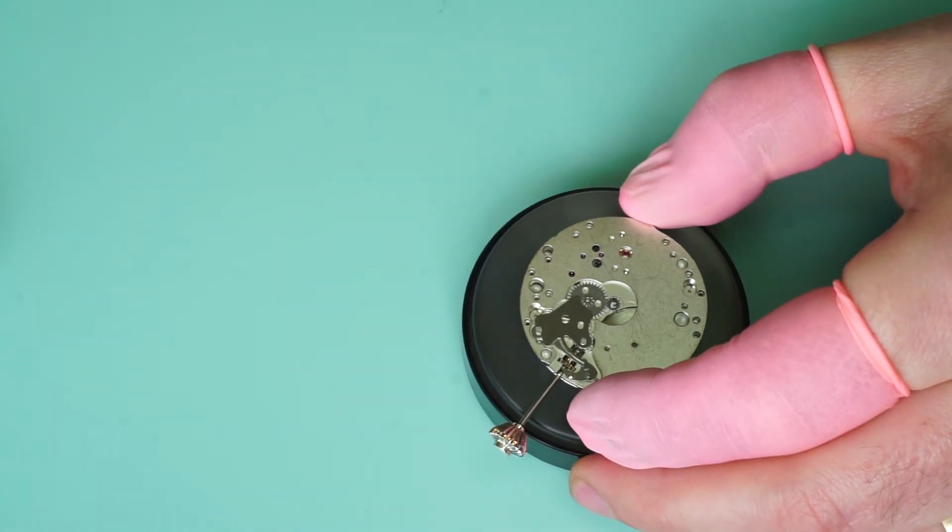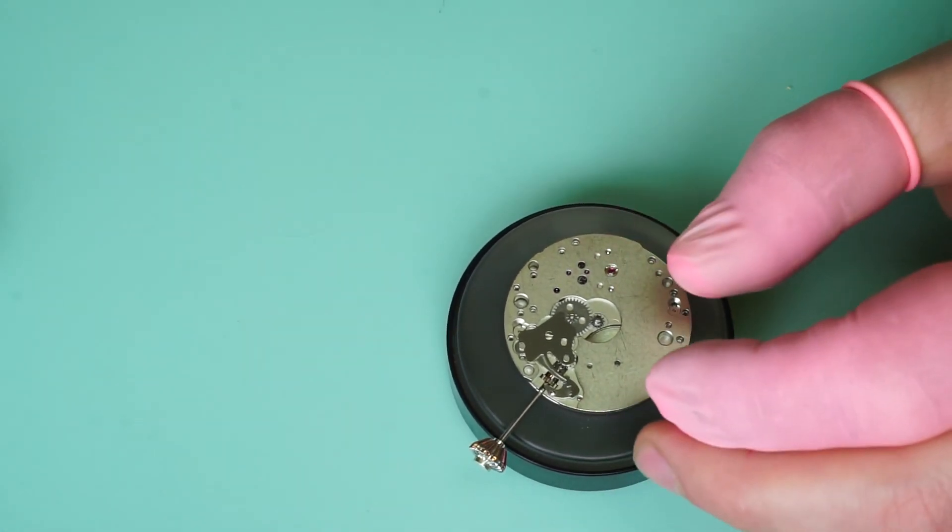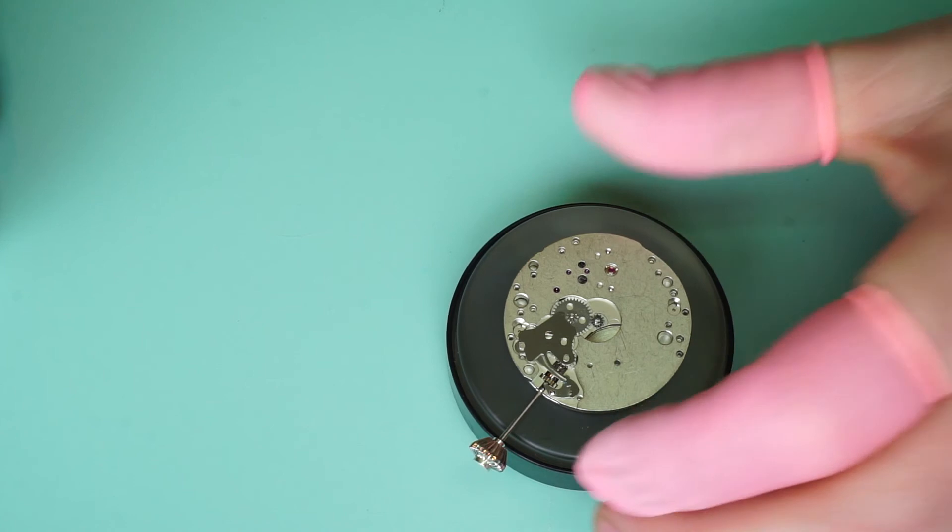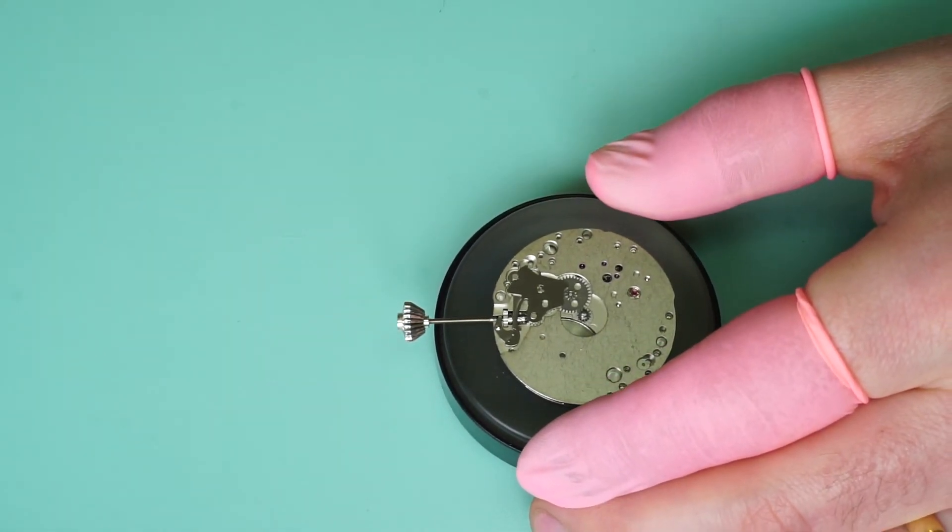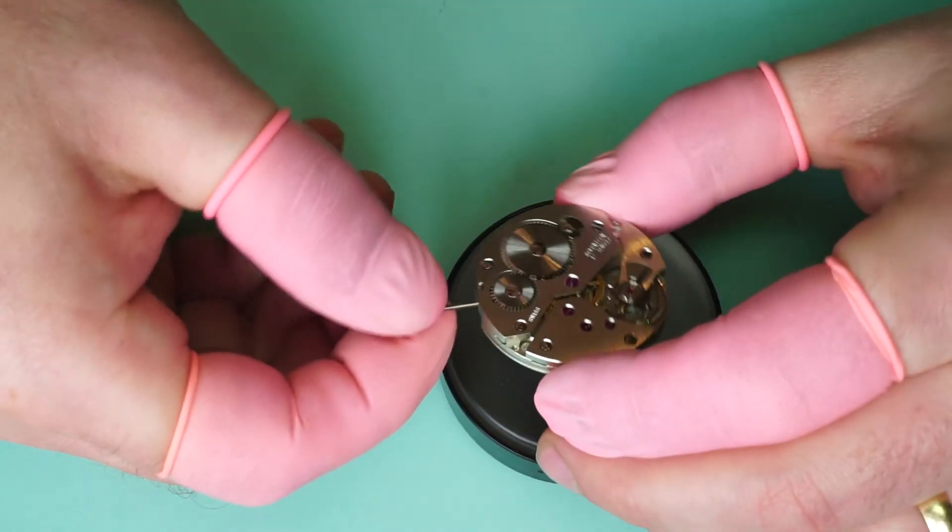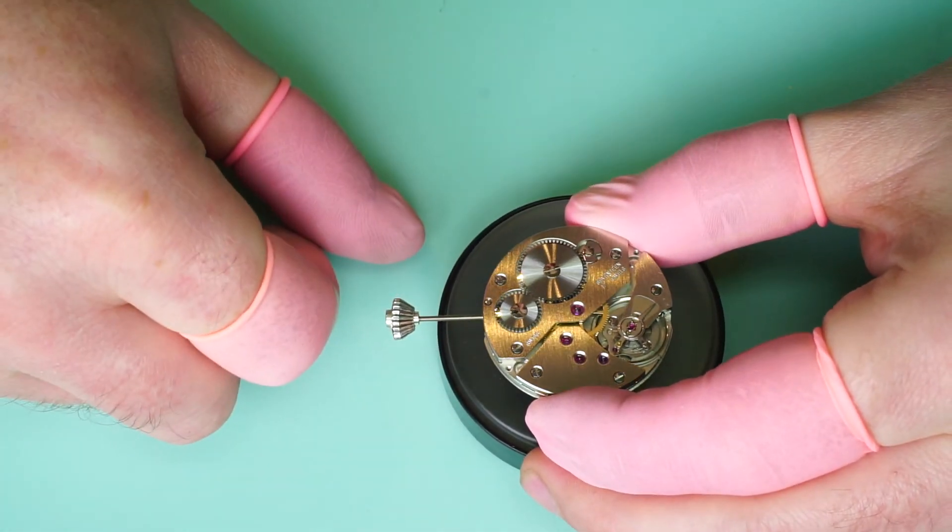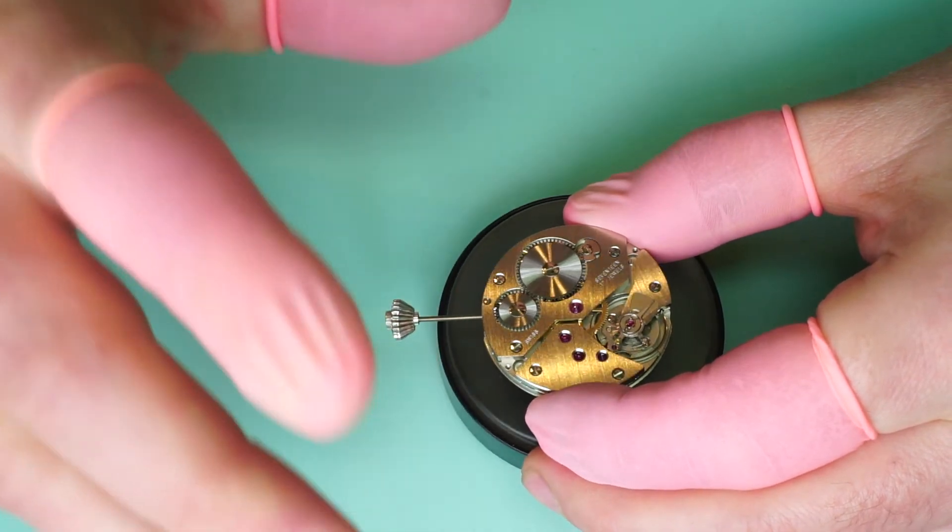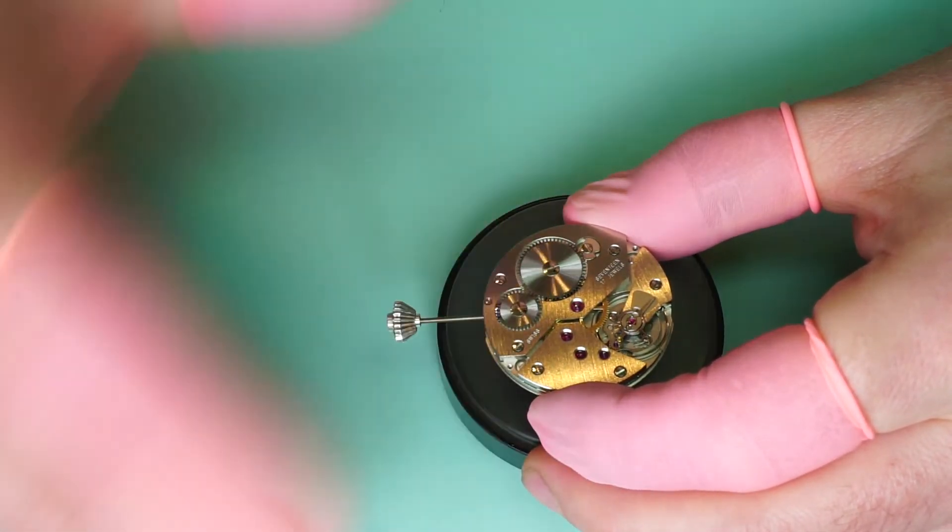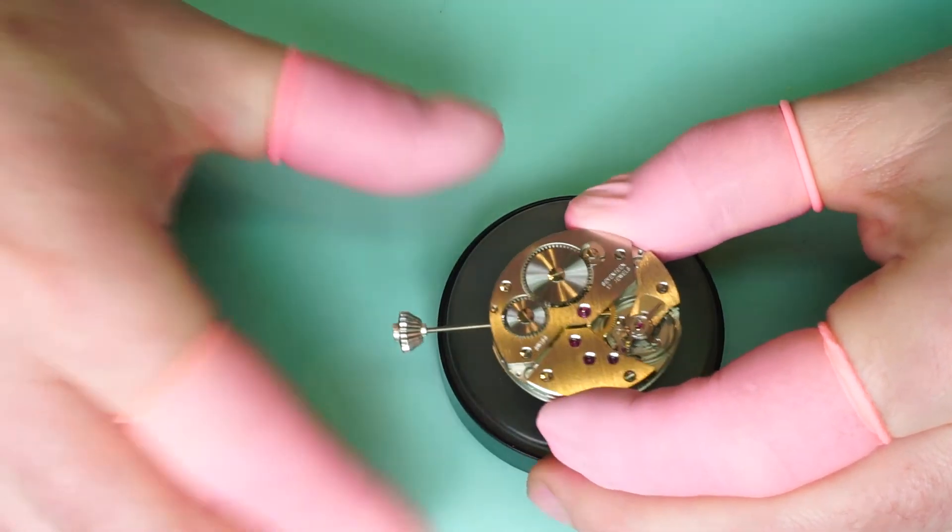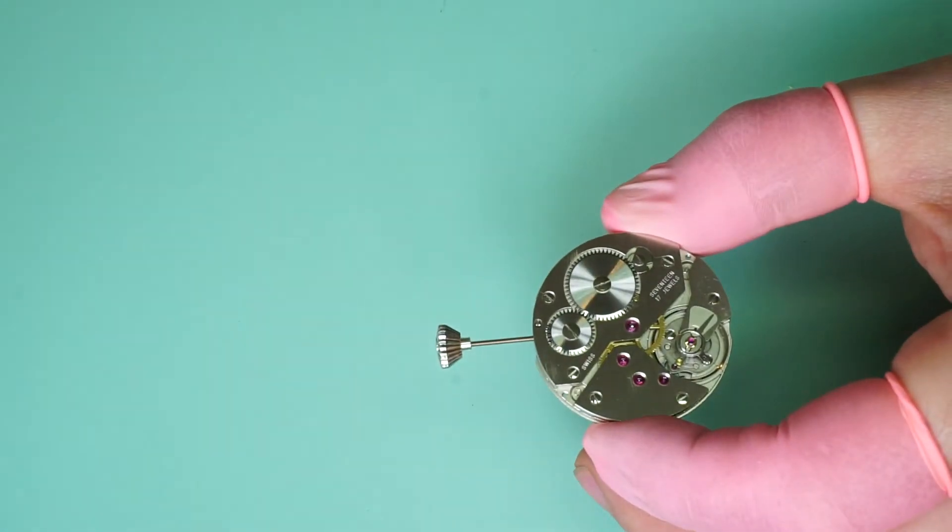Now the lubrication for the other wheel we already did prior to fitting the minute wheel so we don't need to worry about that. And that is the movement pretty much ready to go. I mean that's the basics of it. It is a little bit crude how I've done it in the video. It does require a certain level of a bit more precision but you're going to get the general idea of how to do it and where.